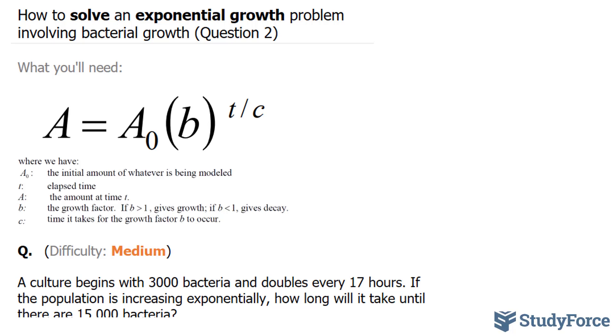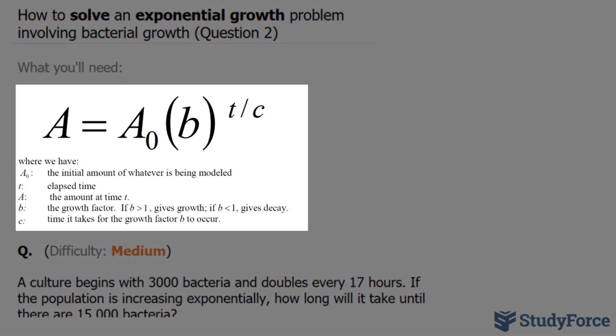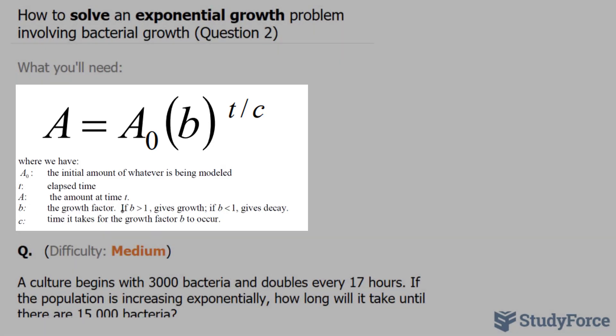What you'll need to know is the following formula, where A is equal to A sub-zero times b to the power of t over c, and these letters are defined below. We'll refer back to this legend as we solve the question.